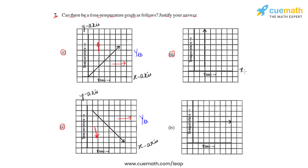In the third line graph, the x-axis represents time and the y-axis represents temperature. Here we see that only the temperature is increasing but there is no change in time — time is constant. This is impossible because time is a quantity that will always increase. Hence, this line graph will not represent a time-temperature graph.